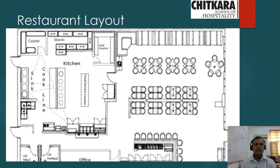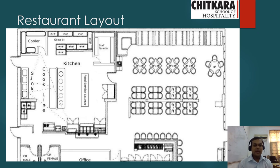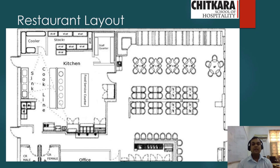The kitchen includes sinks, a cooking line, stock coolers, and a food service counter from where food can be picked up. There is a staff quarter where kitchen staff can change uniforms, and an entry point for the service team to pick up food and move to the restaurant for service. There are two separate restrooms — one for female and one for male. As per legal requirements, every restaurant must have restrooms bifurcated by gender, and many places also provide handicapped-accessible restrooms.